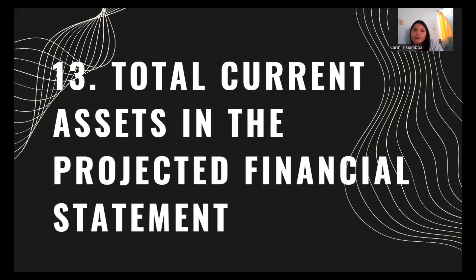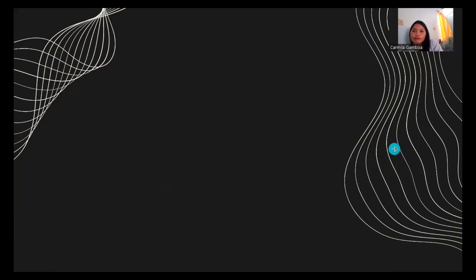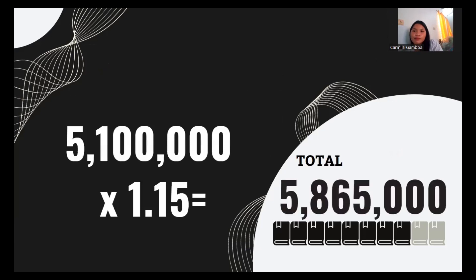Number thirteen, total current assets in the projected financial statement. Current assets of 5,100,000 times the expected sales increase of 1.15 equals 5,865,000.